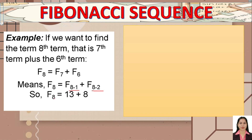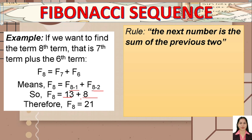So f-sub-7 from the table is 13, and f-sub-6 is 8, therefore f-sub-8 is equal to 21. You simply add the two numbers. This example shows that the rule of the Fibonacci sequence is that the next number is the sum of the previous two.